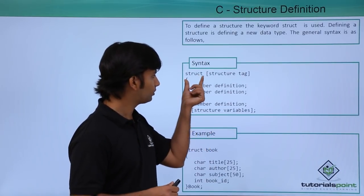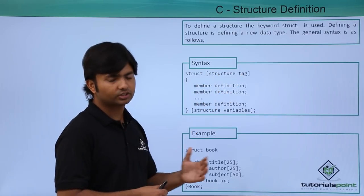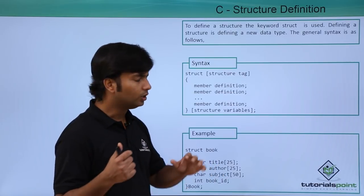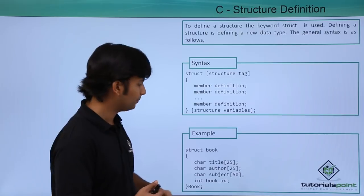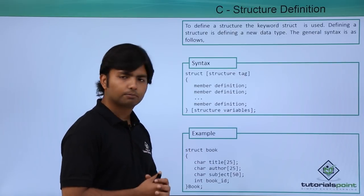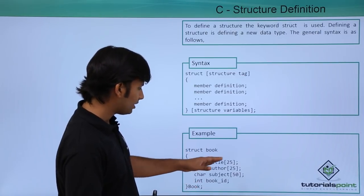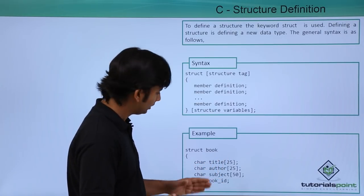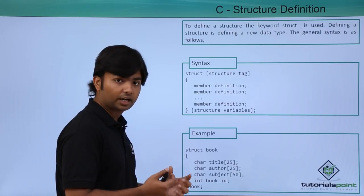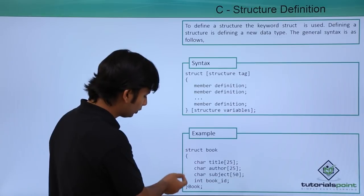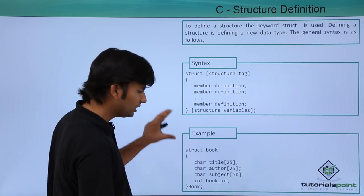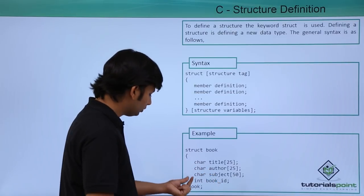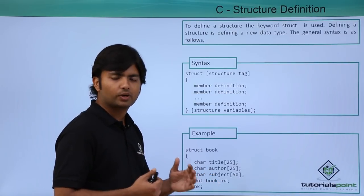So how can I do that? Using struct — the struct tag means the name of the structure. Since it's a user-defined data type, you as the developer will give a name to this data type. Like here: struct book, with a char array for title, author, subject, and integer book ID. This is the complete data type — starting from the struct keyword till the closing curly brace.